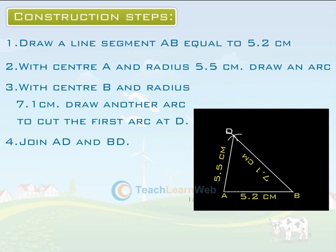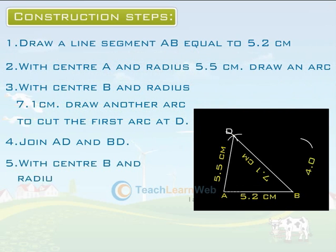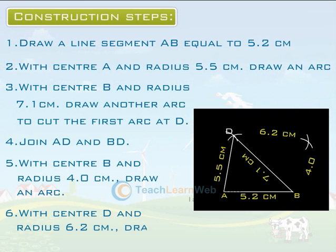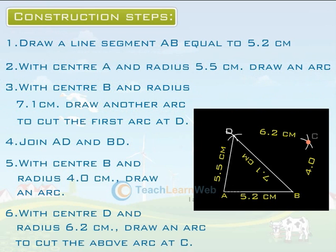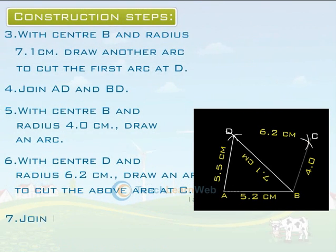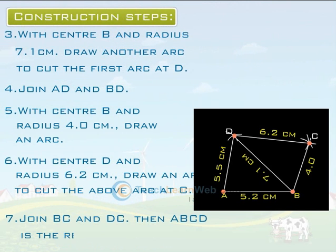Step 5: With center B and radius 4.0 cm, draw an arc. Step 6: With center D and radius 6.2 cm, draw an arc to cut the above arc at C. Step 7: Join BC and DC. Then ABCD is the required quadrilateral.